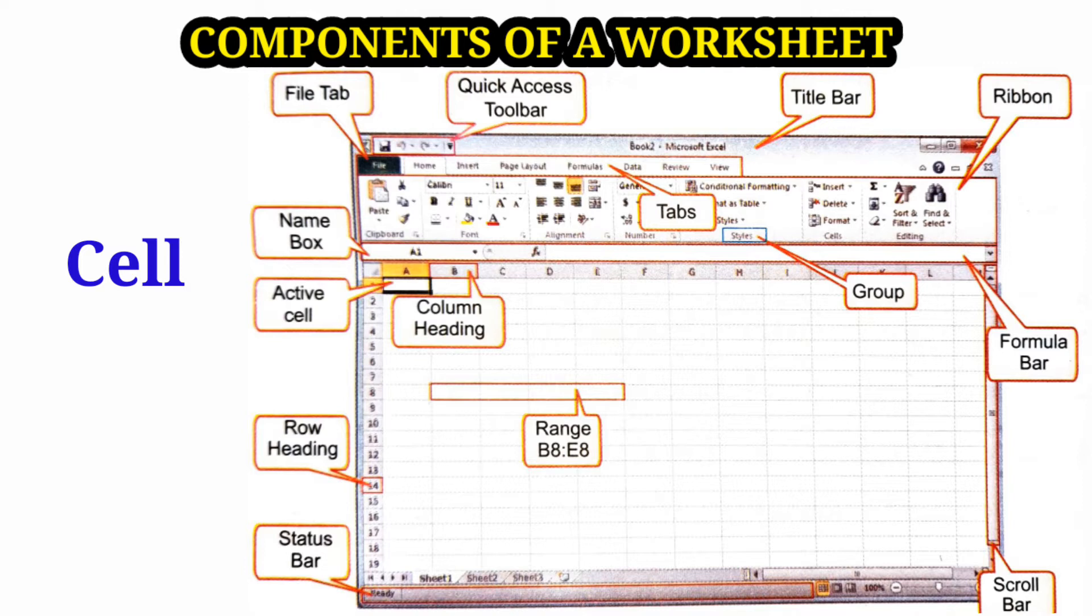A cell can contain up to 32,767 characters. Active cell - when you click on a cell, a thick black border differentiates it from the rest of the cells, indicating the cell is active. Range - a range is a group of contiguous cells which form the shape of a rectangle.